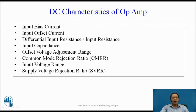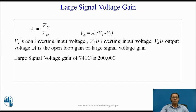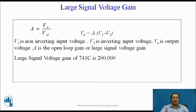Let us go ahead and understand a few more characteristics of the operational amplifier. The next characteristic is called the large signal voltage gain, defined as the ratio of output voltage divided by the input differential voltage: A = V0 / VID, which can also be written as V0 = A × (V1 − V2), where V1 is the non-inverting input voltage, V2 is the inverting input voltage, and V0 is the output voltage. A is called the open loop gain, also known as large signal voltage gain. Its usual value is very high — for example, for op-amp 741C, the value of A is 200,000.